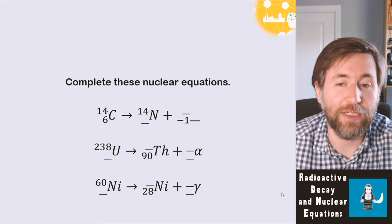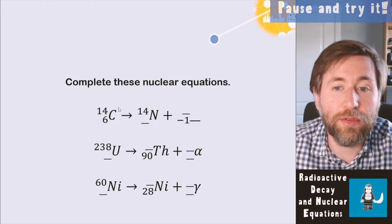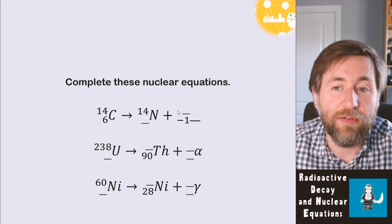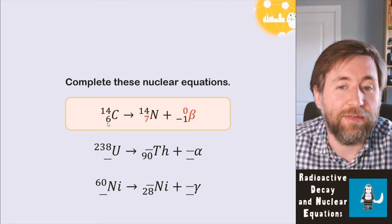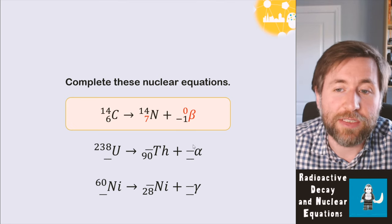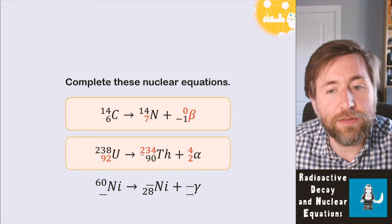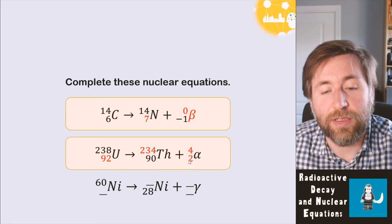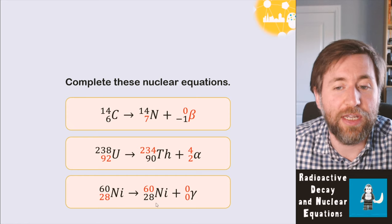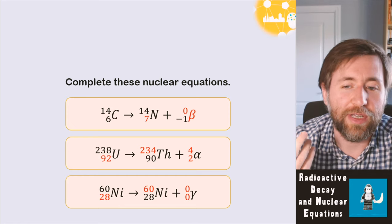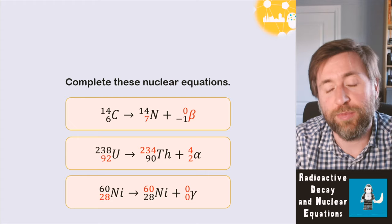Here are three practice problems with blanks to fill in. For the first: the mass number is unchanged, so 14 equals 14 plus zero, meaning zero mass — that identifies it as beta; and the bottom line gives 6 equals 7 minus 1. For the alpha example: write in the alpha code first, then 238 equals 234 plus 4, and 92 equals 90 plus 2. For nickel with gamma decay: fill in the gamma notation zero and zero, and the rest is unchanged — the proton number and neutron number haven't changed, but the isotope has become more stable by losing energy.